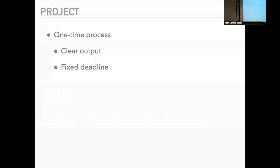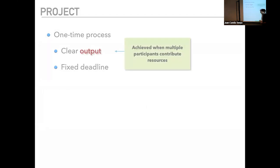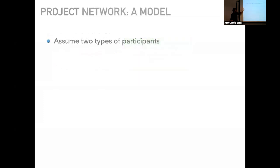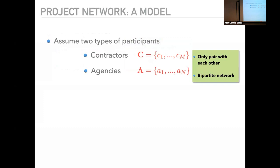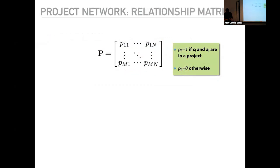Let me sketch how we conceptualize this project network theoretically. We think of a project as a one-time process with a clear output and a fixed deadline, achieved when multiple participants contribute resources. We assume two types of participants to keep it simple: contractors and agencies. In the real network there are many others, but we think of a network with n contractors and n agencies, creating a bipartite structure because you need the expertise of both parties. This gives rise to a project network defined as a relationship matrix P_ij = 1 if i and j are interrelated in a project, and 0 otherwise.